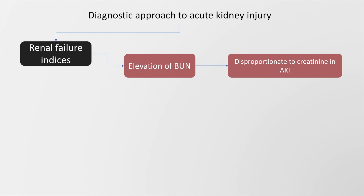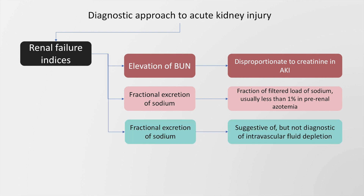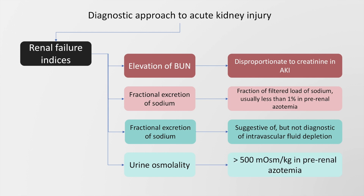Renal failure indices include elevation of blood urea nitrogen, which is generally disproportionate to the creatinine rise in acute kidney injury. Fractional excretion of sodium represents the fraction of the filtered load of sodium, and is generally less than 1% in pre-renal azotemia due to avid sodium retention. A low fractional excretion of sodium is suggestive of, but not diagnostic of, intravascular fluid depletion. Urine osmolality is generally more than 500 milliosmoles per kg in pre-renal azotemia, suggesting a functional kidney.